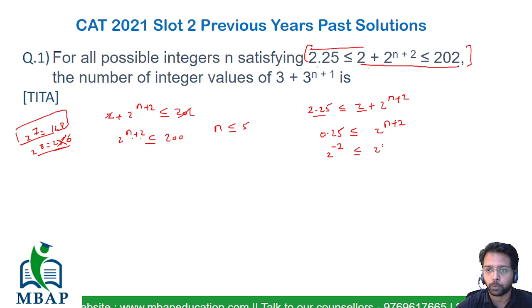Now 0.25 is basically 1/4, and 1/4 is 2^(-2), so it's going to become 2^(-2) ≤ 2^(n+2). From here you will get n+2 ≥ -2, or n ≥ -4. So on one side I got n ≥ -4 and n ≤ 5. So which all possible values of n can I take? I can take all values of n right from -4, -3, -2, -1 till the last value which is 4, 5.